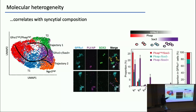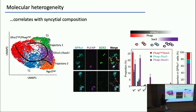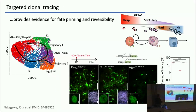This also correlates with syncytial composition. Cells belonging to the PLVAP-high SOX3-negative cluster are mostly tilted towards A-singles with a little bit of A-pairs. Cells belonging to the primed group — PLVAP-negative, SOX3-high, GFRA1-intermediate — extend more broadly. But if we really want to see whether this population is able to contribute long-term to renewal, we have to do lineage tracing.